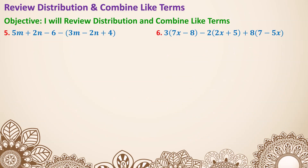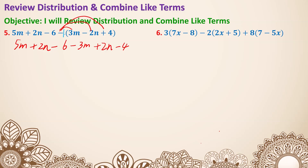Moving on to examples 5 and 6. Example 5 is very similar to 4 — there's no number next to certain parentheses, but it's actually a negative 1. The 5m, 2n, and negative 6 in the front don't interact with the parentheses, so we copy those down: 5m plus 2n minus 6. Then negative 1 times 3m is negative 3m, negative 1 times negative 2n is positive 2n, and negative 1 times 4 is minus 4. Combining like terms: 5m and negative 3m is 2m, positive 2n and positive 2n is positive 4n, and negative 6 and negative 4 is negative 10.